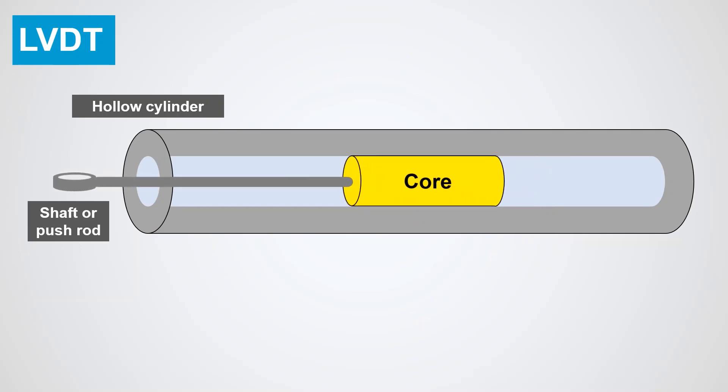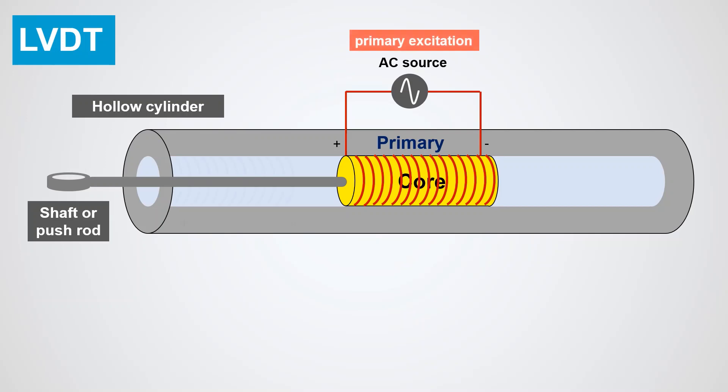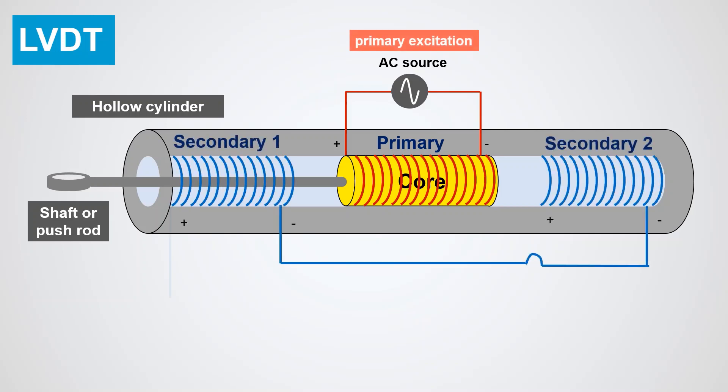A primary coil is wrapped around the middle of the hollow cylinder and is energized by constant amplitude AC source known as the primary excitation, while two secondary coils having equal number of turns are wrapped on either side of the cylinder at equal distances from the primary coil.